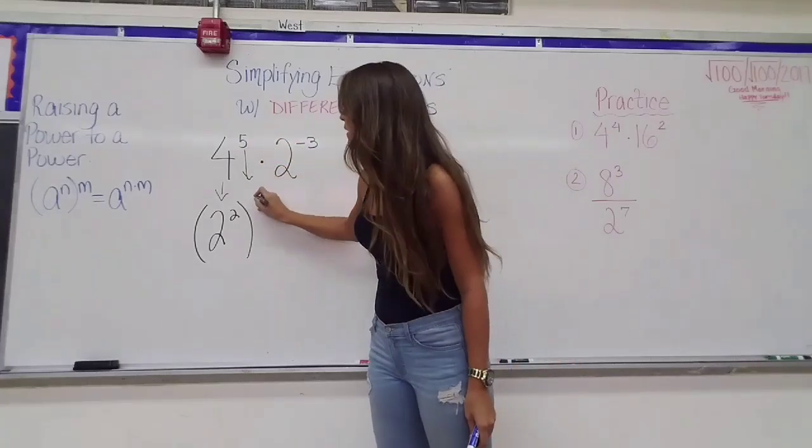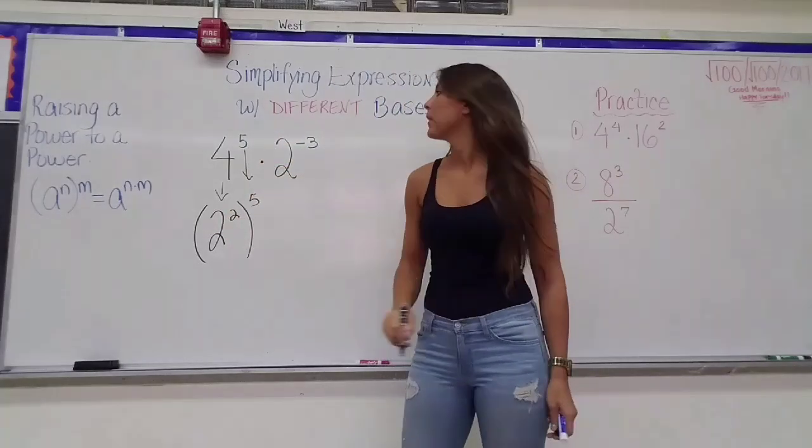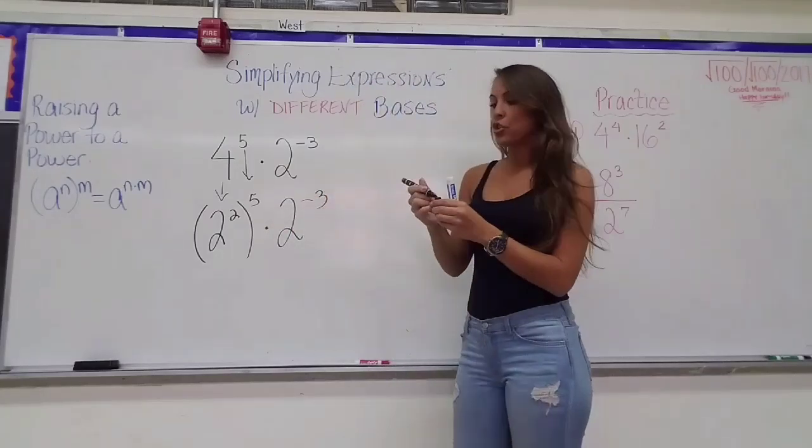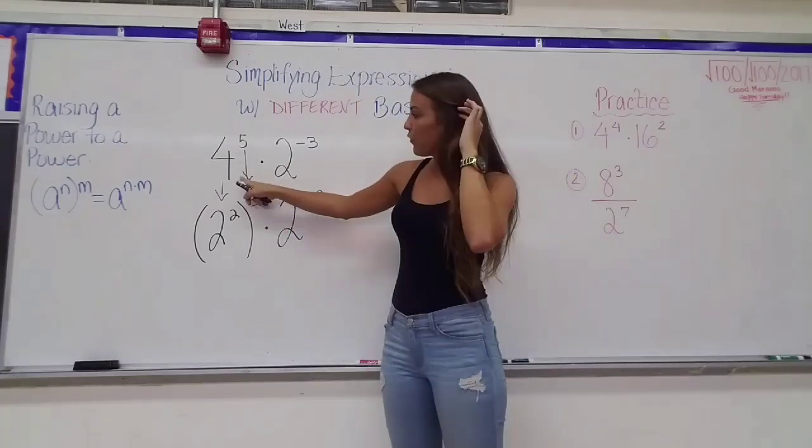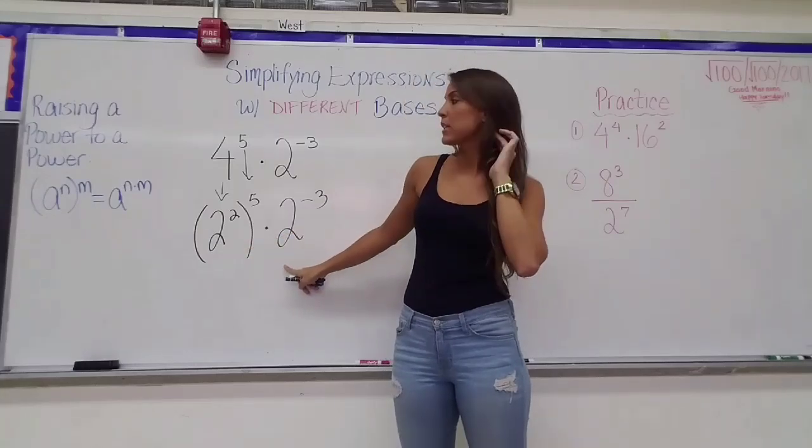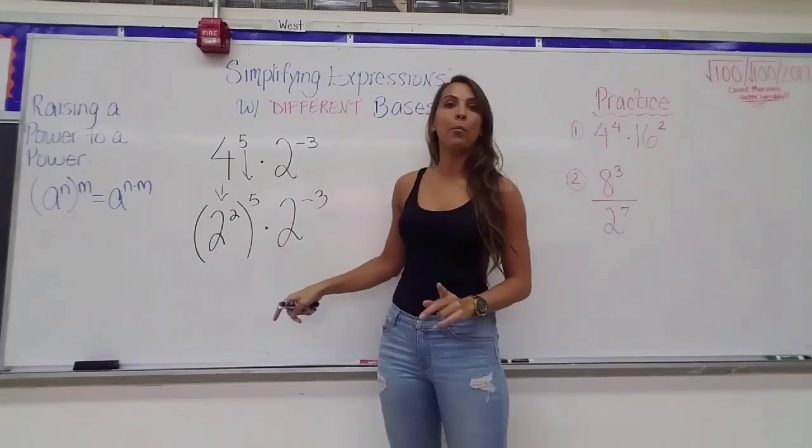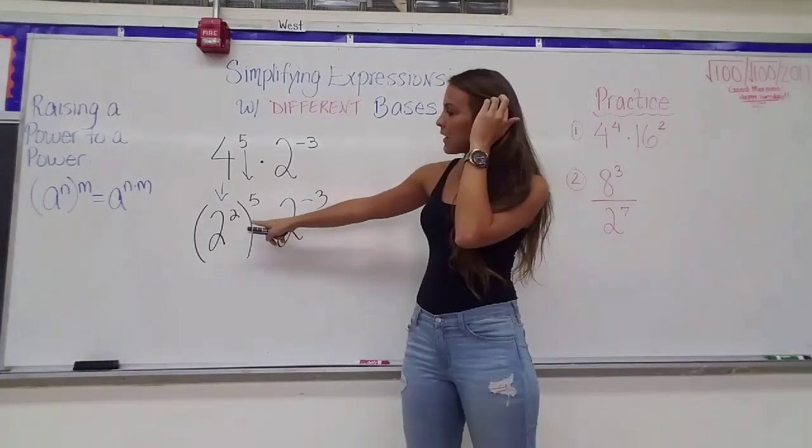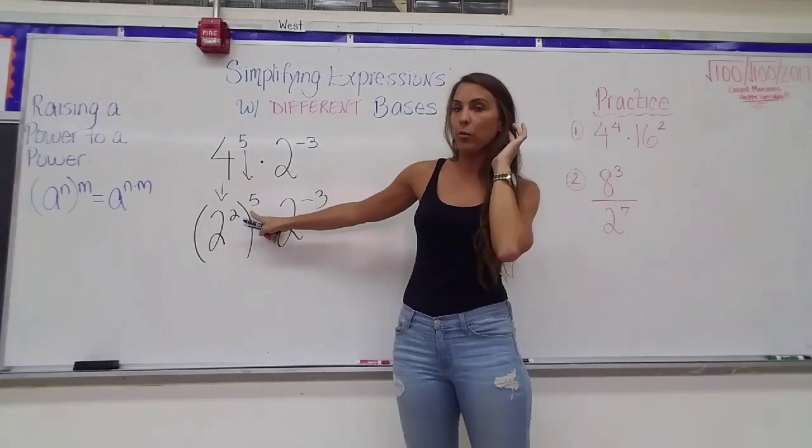And now I can't forget about this 5. I'm going to bring down the exponent of 5. And I'm going to bring down the rest of my expression times 2 to the negative 3rd. So now what I've done is I've converted the 4 so that it does have the same base as my other expression. And now I can almost apply the multiplication law of exponents.